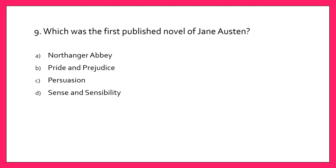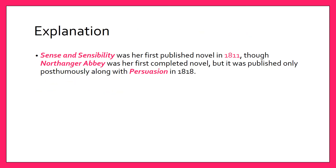Which was the first published novel of Jane Austen? A. Northanger Abbey, B. Pride and Prejudice, C. Persuasion, or D. Sense and Sensibility? The answer is D. Sense and Sensibility. Sense and Sensibility was her first published novel in 1811, though Northanger Abbey was her first completed novel, but it was published only posthumously along with Persuasion in 1818.